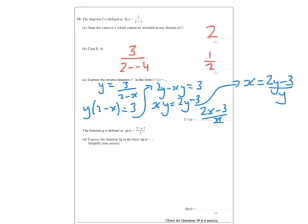Now, it says the function g is defined as g of x equals 2 to the x plus 1 over 3. So we express the function fg in the form fg of x equals, simplify your answer. So that means that we're putting g of x, this thing here, into f of x, which is this thing here. So fg of x is going to be 3 over 2 minus 2x plus 1 over 3.